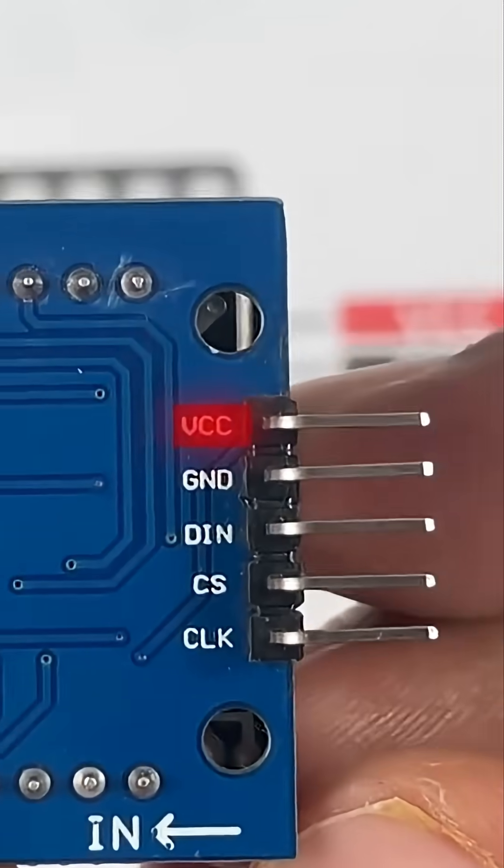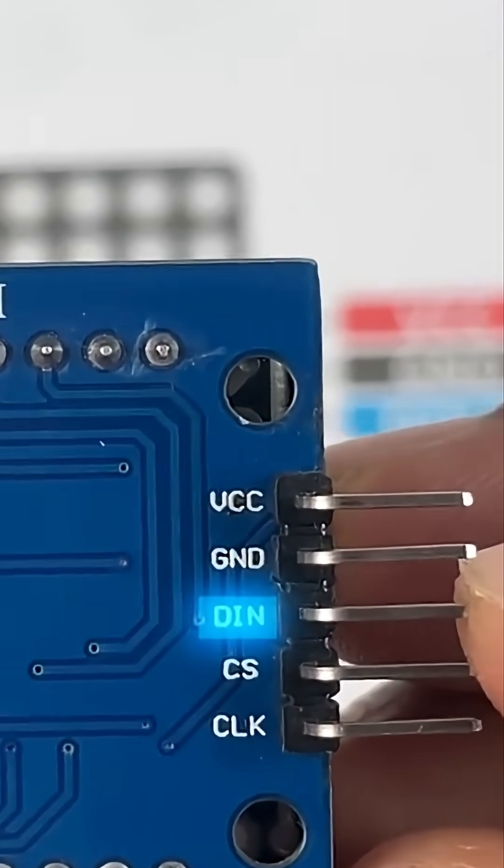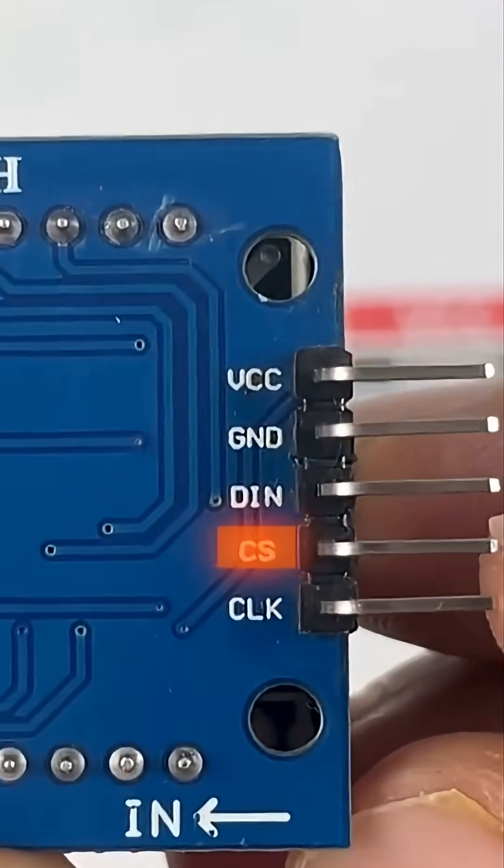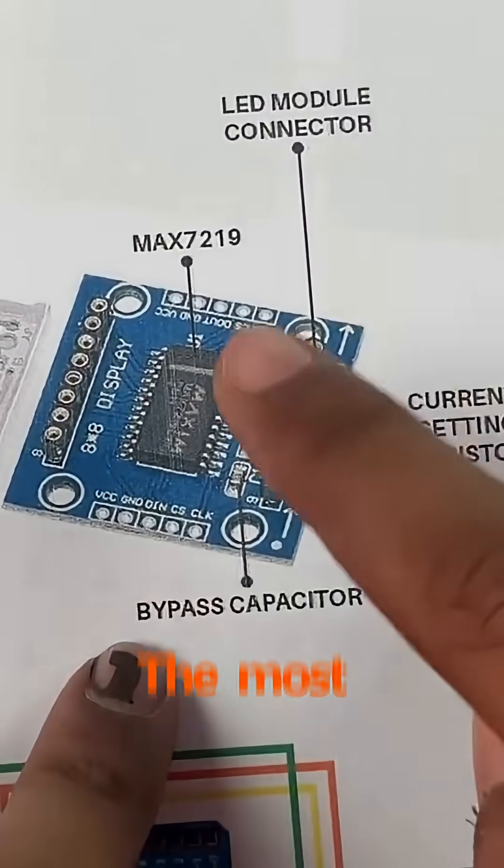Which is the VCC - we'll be providing the 5 volts over here, the ground pin, the DIN which stands for data in, the CS which stands for chip select, and the CLK which stands for clock. The most important component on this board is the MAX7219 display driver IC.